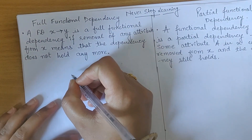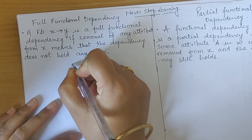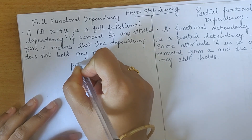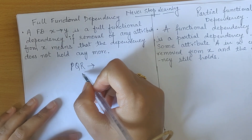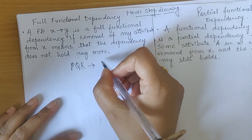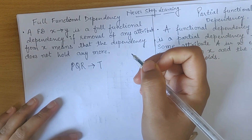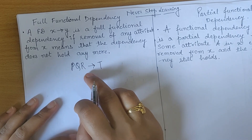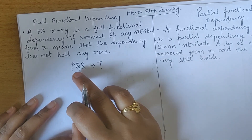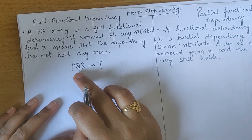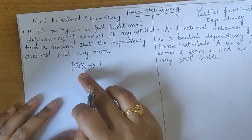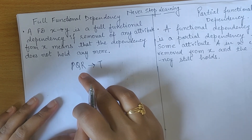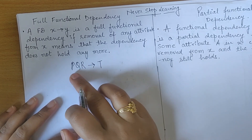Let us suppose I am having a functional dependency where there are three elements P, Q, and R. These PQR are the determinant and they determine another attribute T. So we say PQR determines T, or T is functionally dependent on PQR. We will say that T is fully functionally dependent on PQR if it cannot be determined by any subset of PQR.